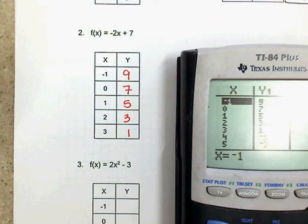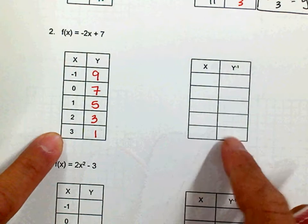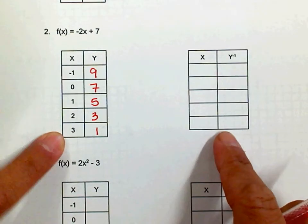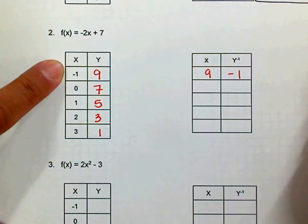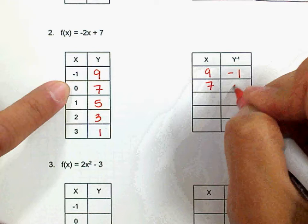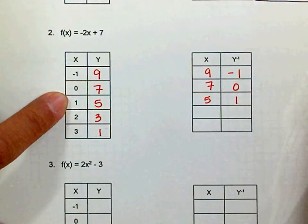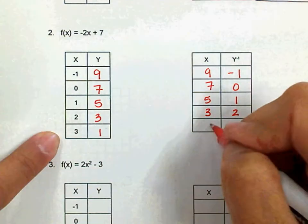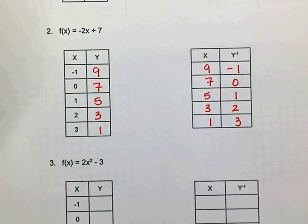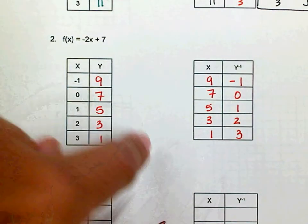Okay. Do you see how that matches up? All right. Do you even have to do any work to find this one at all? No. All you have to do is what? Switch it. Okay? Because it's an inverse. Seven and zero, five and one, three and two, one and three.